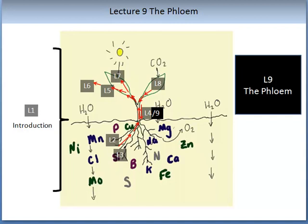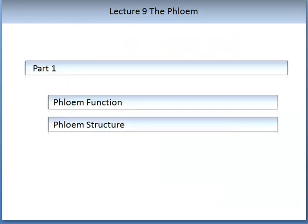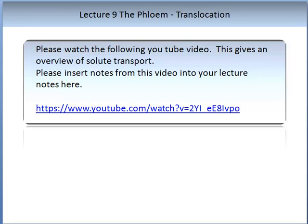We have entered the leaves, we have learnt about photosynthesis, transpiration, and now we are learning about how carbohydrates and other compounds are distributed through the plant in the structure called the phloem. This lecture is separated into two parts. In the first part we are going to learn about phloem function and phloem structure. Please watch the following video on solute transport and make notes on the main concepts to insert into your lecture notes.